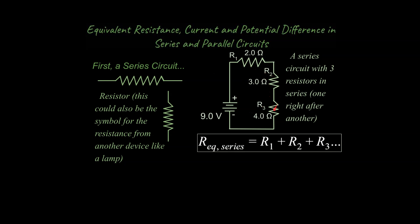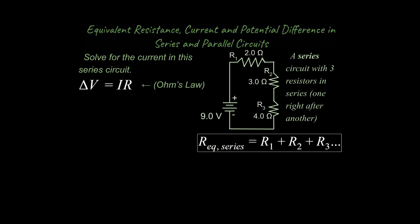A resistor is an important concept in everyday life. If we have a very simple circuit with only one pathway for charges to flow, that is called a series circuit. To find the equivalent resistance — the overall resistance for the entire circuit — you simply add up the individual resistances from each of the resistors. If we want to solve for the current in a series circuit, we start with Ohm's Law.